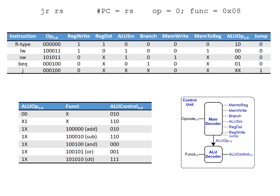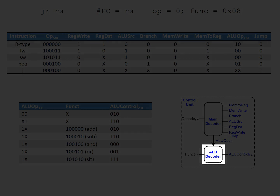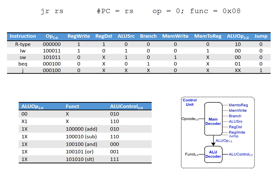We also have to consider how the control unit needs to be modified to produce this JR signal to feed into the data path. The jump register instruction is an R-type instruction, meaning that its opcode is zero, and so as currently structured, the main decoder in the control unit cannot distinguish this R-type instruction from any other R-type instruction. This means we need to modify the ALU decoder — the one that receives the function field — to produce the JR control signal.